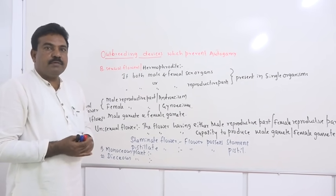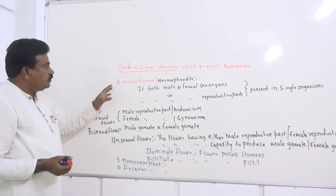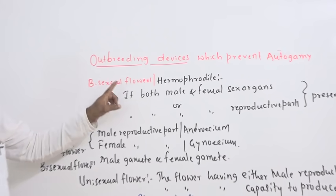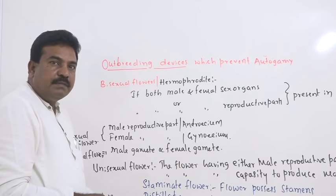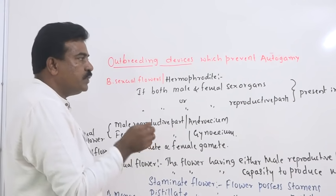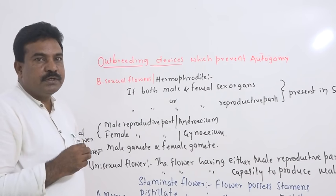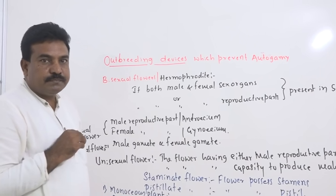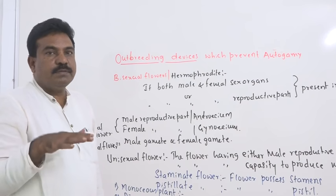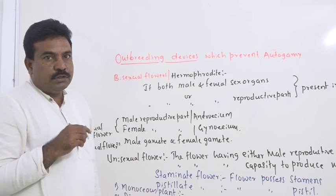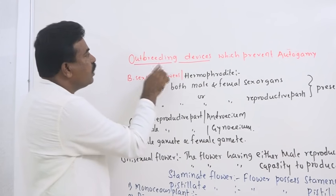If male and female flowers are borne on two different plants of the same species, we call it a dioecious plant — for example, papaya. In papaya, male flowers are borne on the male plant and female flowers on the female plant. Now, the majority of angiosperms bear bisexual flowers. In a bisexual flower, both male and female gametes are available. If pollination takes place within a flower, that is called autogamy. If continuous autogamy or self-pollination occurs, there is inbreeding depression — the viability of fruit and seed is reduced, and the genetic makeup becomes weaker. To avoid this, most bisexual flower-bearing plants have specialized outbreeding devices.